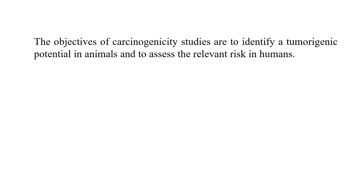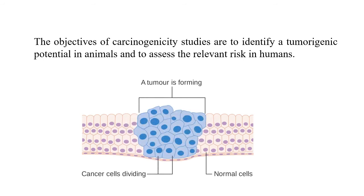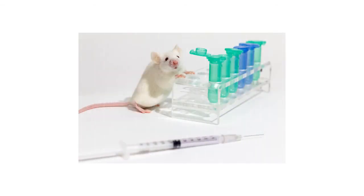The objective of carcinogenicity studies is to identify the tumorigenic potential in animals and to assess the relevant risk in humans. To check carcinogenicity activity of a drug, the drug is repeatedly given to an animal for more than six months, after which the animal is sacrificed and toxicity and development of cancers in various organs are checked.